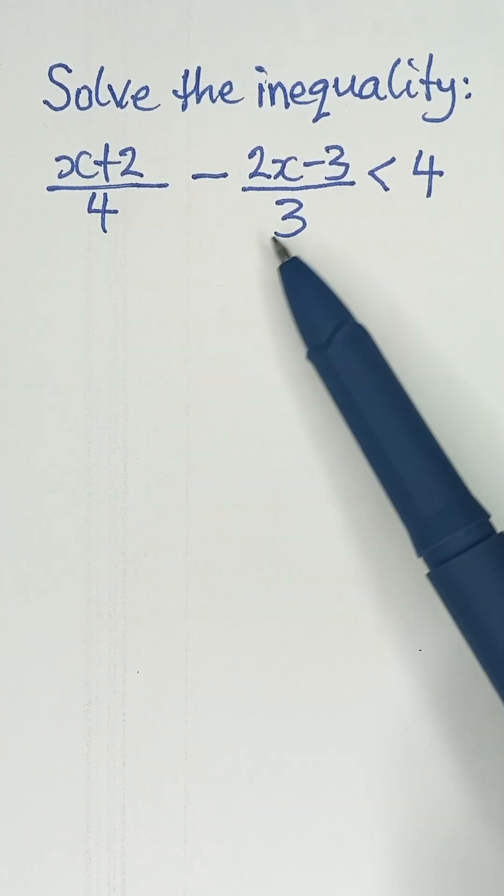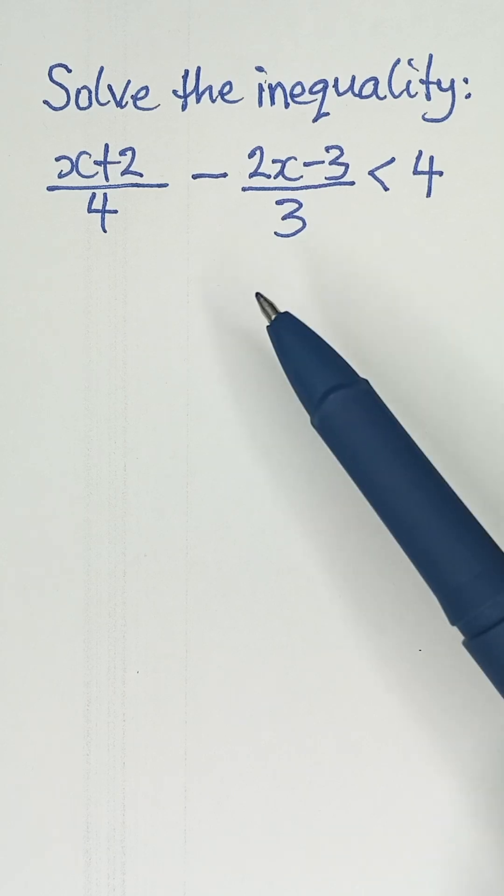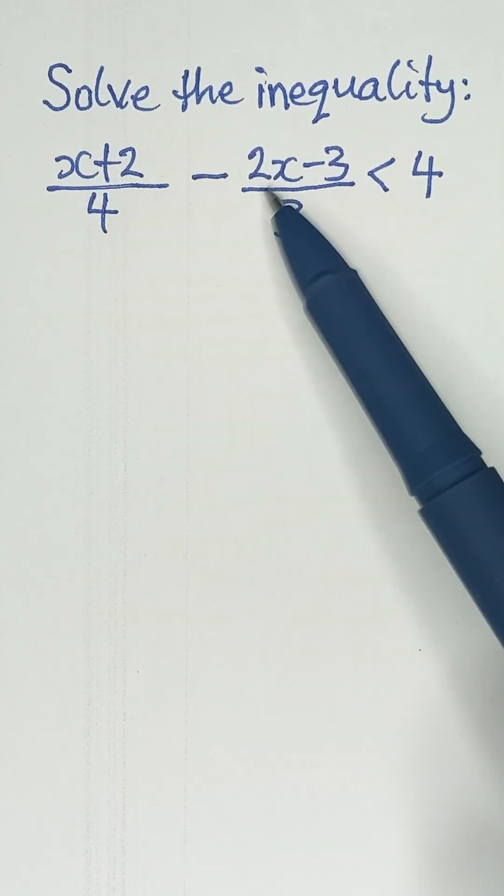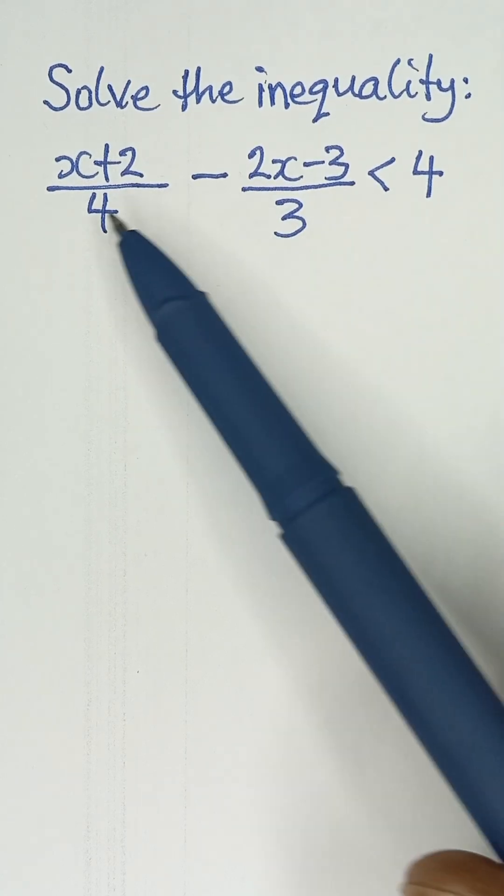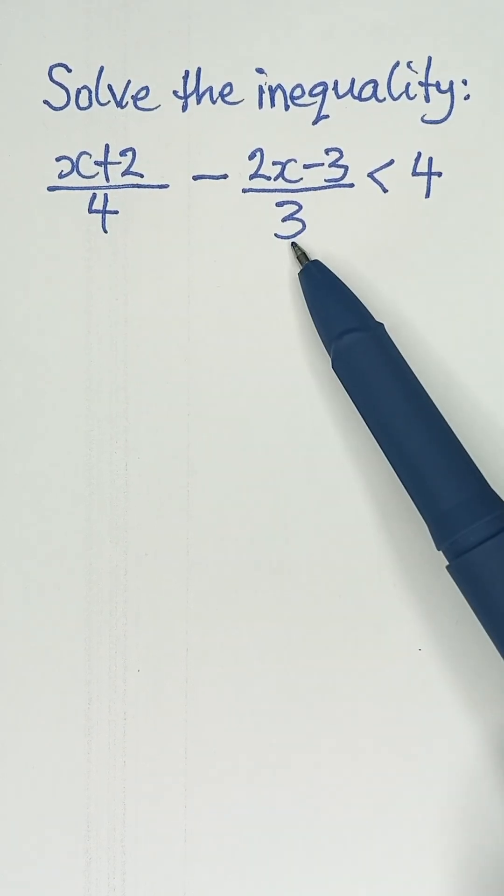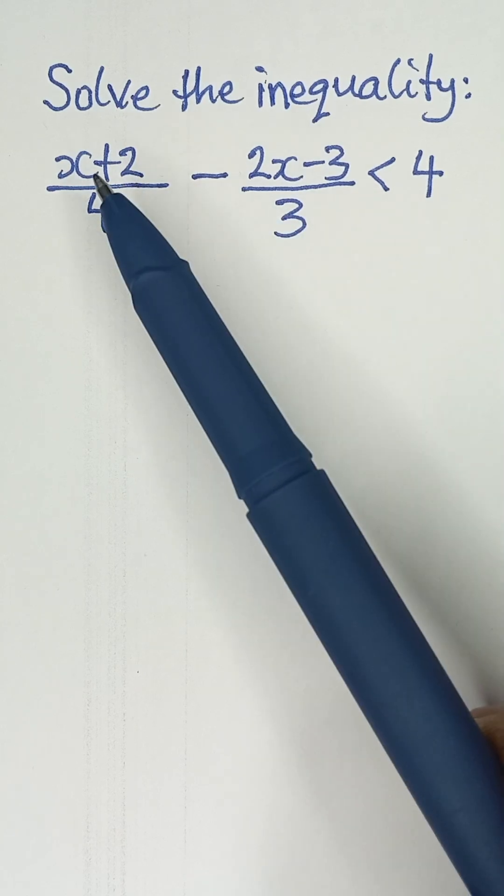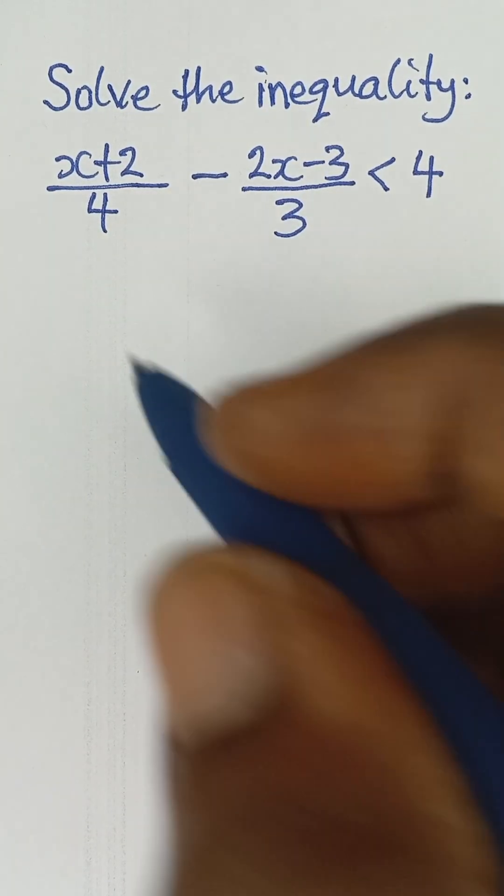Now, because of the fractions that we have here, a simple way to solve this inequality is to multiply each term by the LCM of the denominators. We have 4 and 3 here. The LCM of 4 and 3 is 12. So we're going to use 12 to multiply each of the terms here. That will help us to clear the fractions.